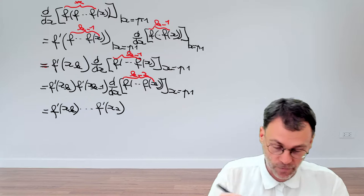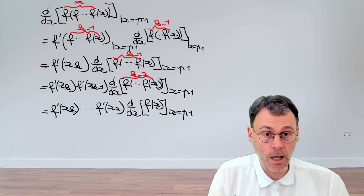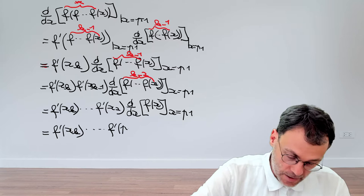This is going to be d/dx of f of x, evaluating that at the point p1. And now we're basically in business, because the final thing is very trivial, and the conclusion is that we just have the product of the derivatives at each of the individual points that make up the orbit.